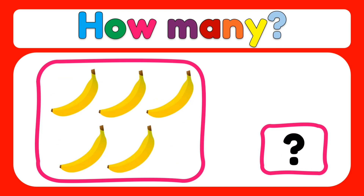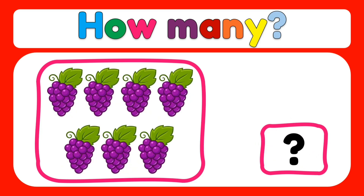How many bananas do you see? The answer is five. Five bananas. How many grapes do you see? The answer is seven. Seven grapes.